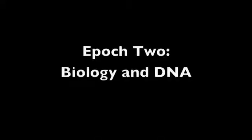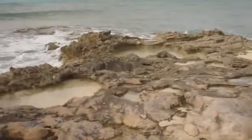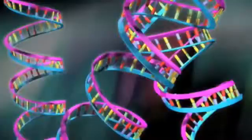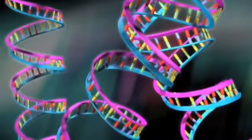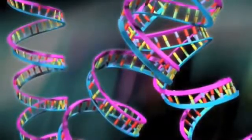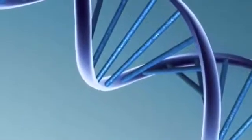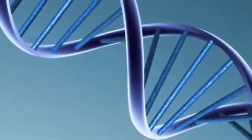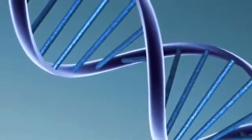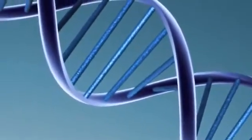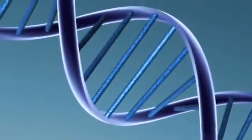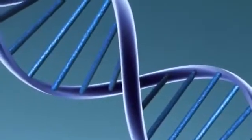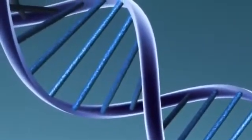Epoch 2: Biology and DNA. In the second epoch, starting several billion years ago, carbon-based compounds became more and more intricate until complex aggregations of molecules formed self-replicating mechanisms, and life originated. Ultimately, biological systems evolved a precise digital mechanism, DNA, to store information describing the larger society of molecules. This molecule and its supporting machinery enabled a record to be kept of the evolutionary experiments of this second epoch.